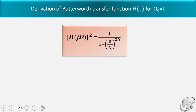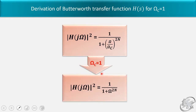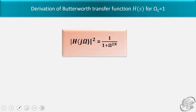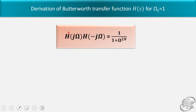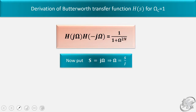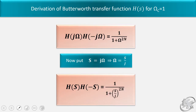The magnitude square value is given by this formula. Now put ω_c equal to 1 in the formula. So we have |H(jω)|² equal to 1 upon 1 plus ω to the power 2n. Now H(jω)² is written as H(jω) into H(-jω). So H(jω) into H(-jω) is equal to 1 upon 1 plus ω to the power 2n. Now put s equal to jω, and also ω equal to s/j.